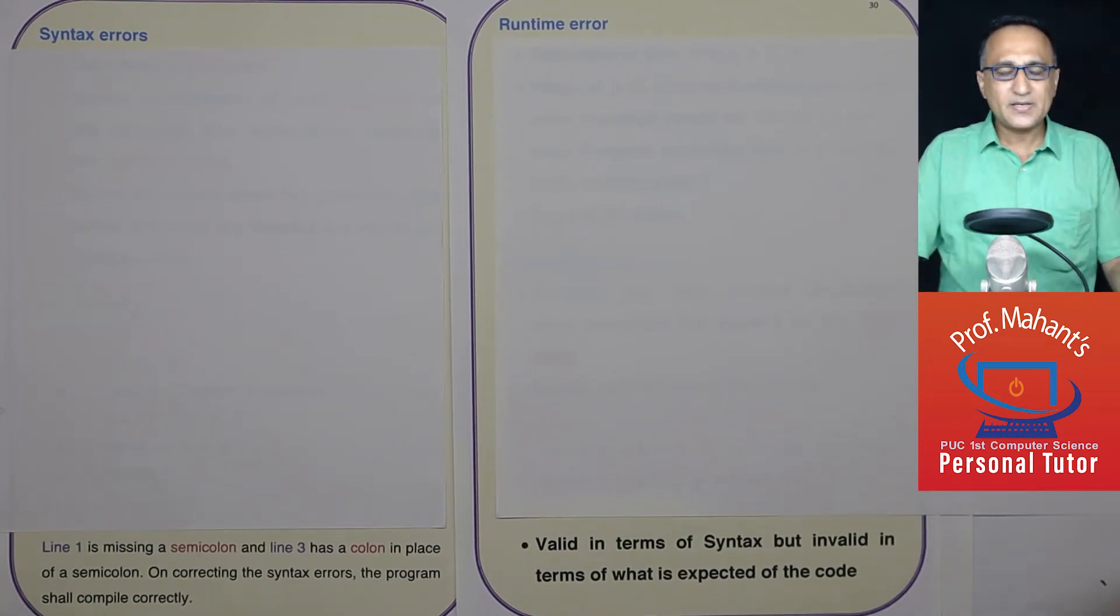When you're writing a program, different types of errors occur. Those are known as bugs, and the process of locating those errors and removing or eliminating those errors is known as debugging.